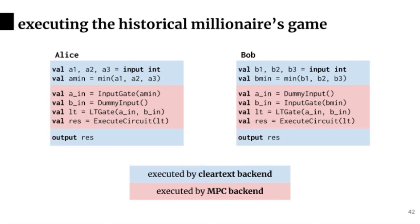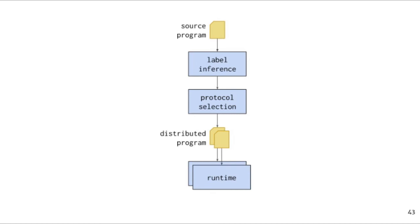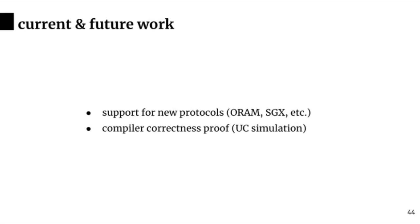That concludes our overview of the Viaduct compiler. Our novel abstractions allow Viaduct to be extensible and able to easily support new cryptographic mechanisms to implement secure distributed programs. There is still a lot of exciting work to be done. We are currently working on adding support for new backends including ORAM and trusted enclaves like SGX. We are also thinking about how to prove the Viaduct compiler pipeline correct, meaning proving that the distributed programs Viaduct generates are secure in the universal composability framework for cryptographic protocols. Thank you for listening, and I'll be happy to take questions.